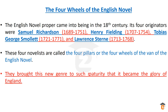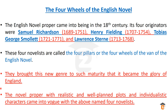These four novelists brought this new genre to such maturity that it became the glory of England. Their novels featured well-constructed plots, compelling characters, rich stories, and vivid picturization. They were very mature in plot construction and in the use of characters, which is why they are called the four wheels of the English novel.